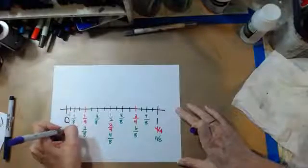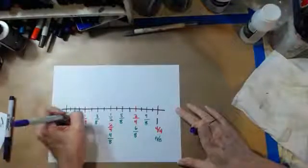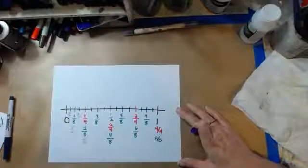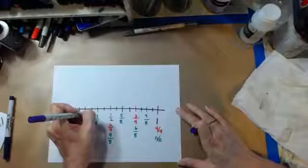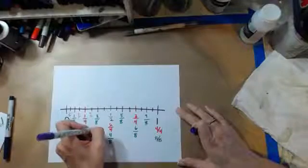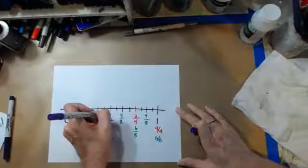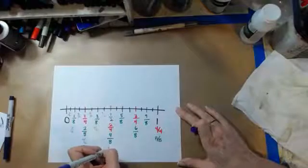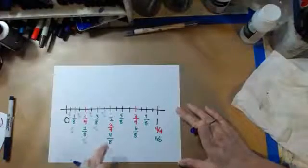That's one sixteenth, two sixteenths, three sixteenths, four sixteenths, five sixteenths, six sixteenths, seven sixteenths, eight sixteenths.